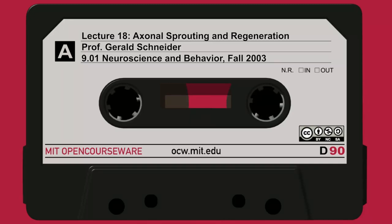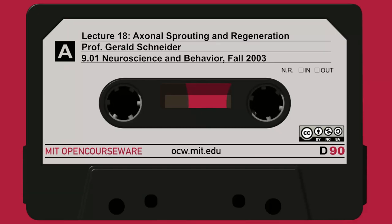We'll talk about oligodendrocytes and how they can also inhibit axon growth. We're going to talk about plasticity and axonal development, where you can get regeneration. You can get a lot of collateral sprouting in the developing organism, and we'll mention collateral sprouting again in the adult.